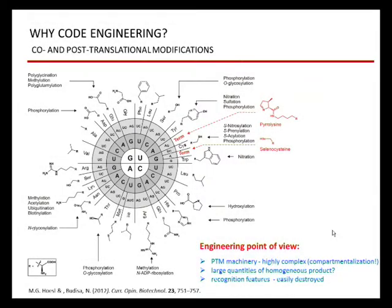When we are talking about genetic code engineering, we are mainly concerned with the possibilities and applications. When we look at the table of the genetic code, we see that nature uses a basic 20 building blocks to build proteins. The side chains of these building blocks are, however, of quite limited chemistries, and these limitations nature overcomes in two ways.